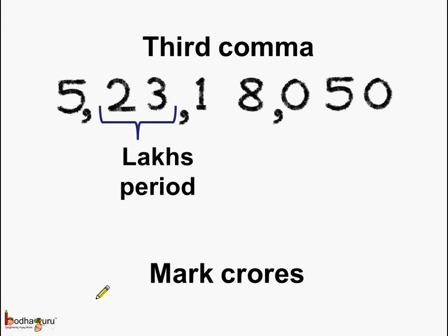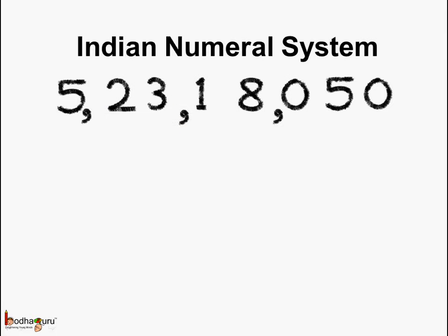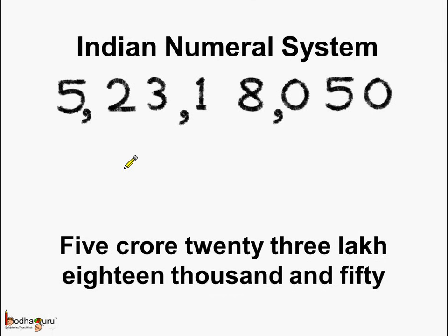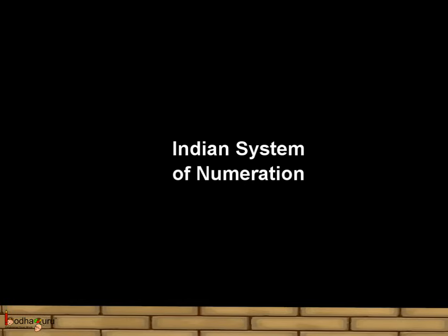So now you know how to read large numbers according to the Indian numeral system. Let us read this number. This is the crores place, this is the lakhs place, this is thousands, and this consists of the unit period — hundreds, tens and ones. So the number can be read as five crores, twenty-three lakhs, eighteen thousand and fifty.